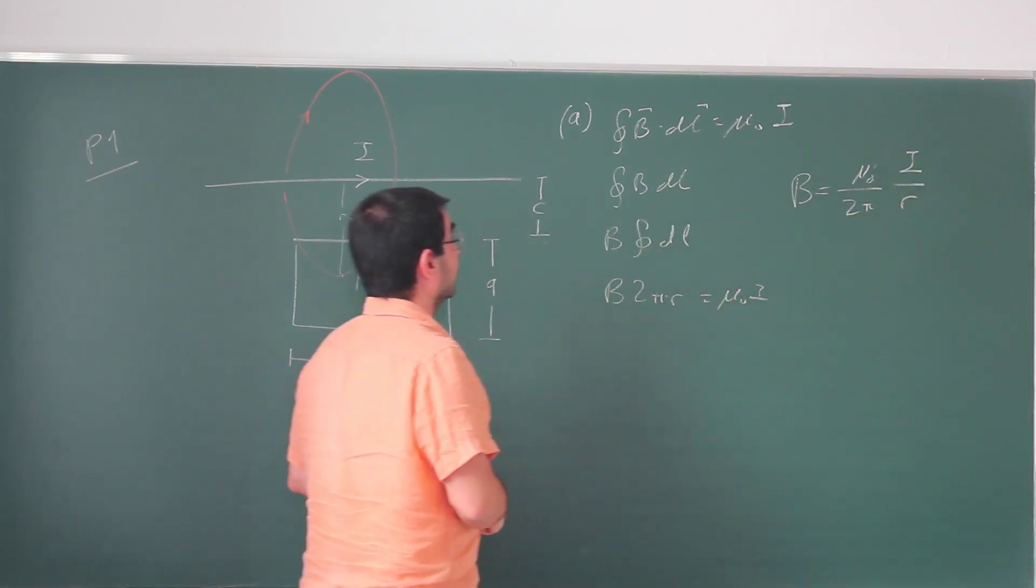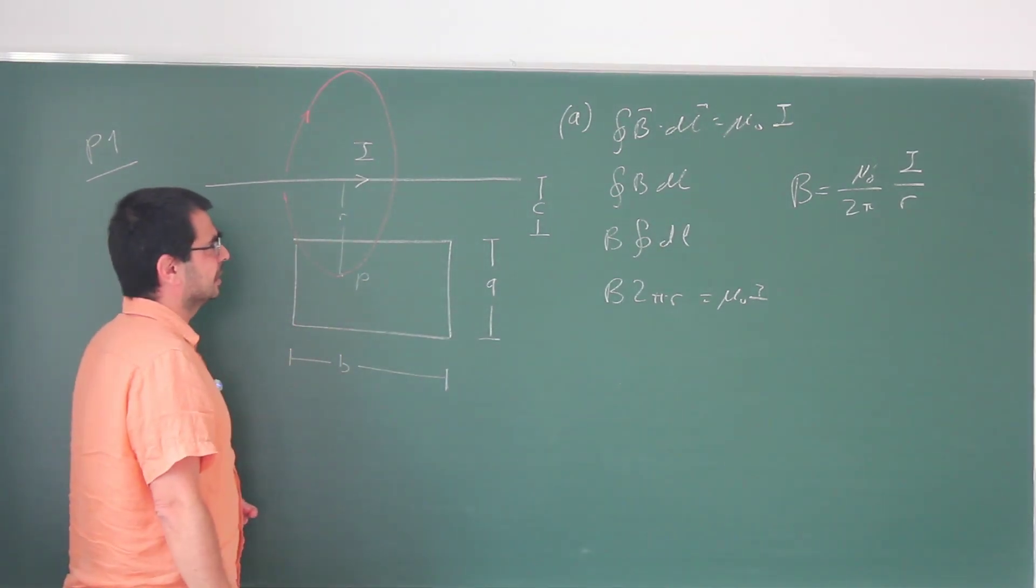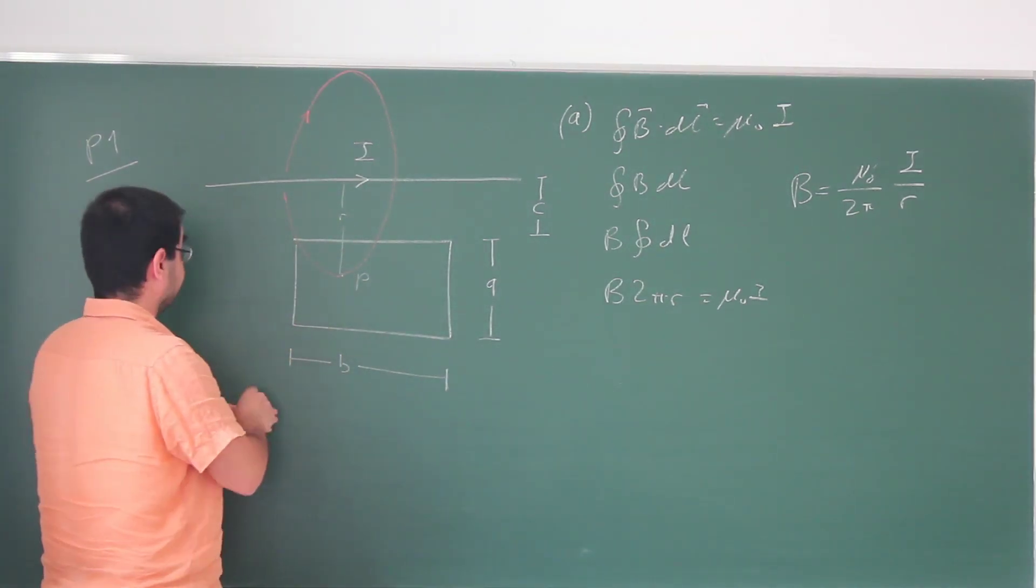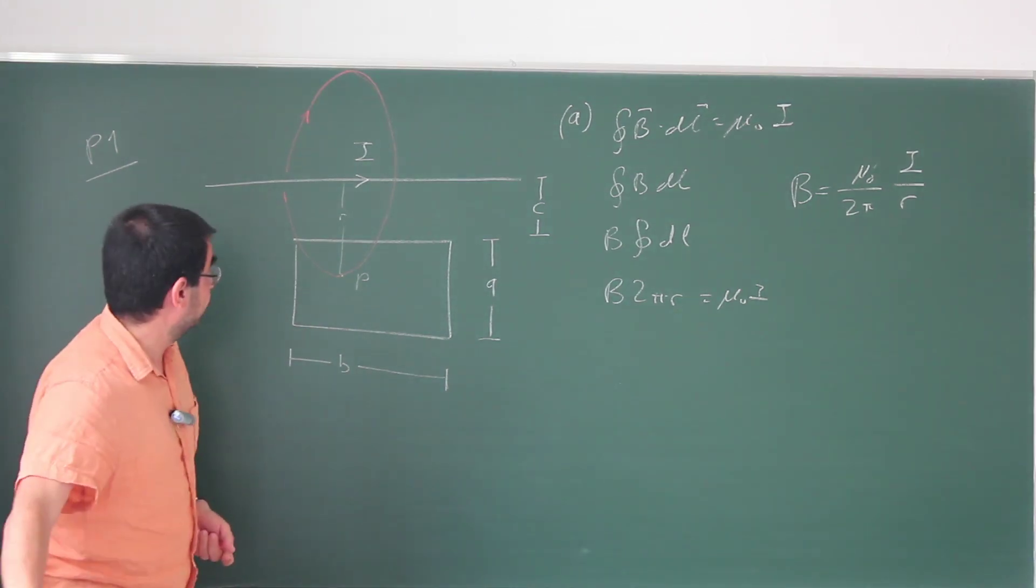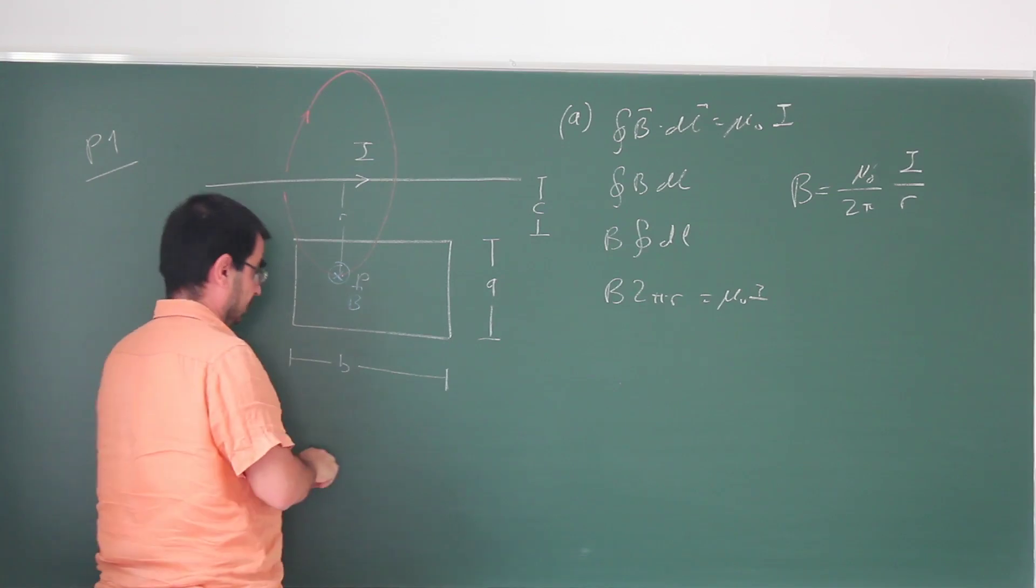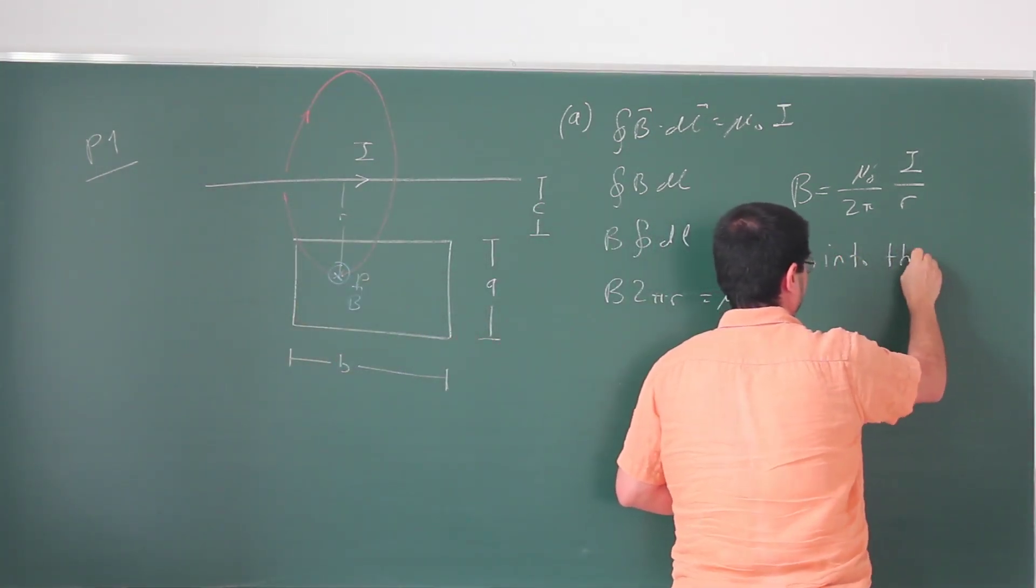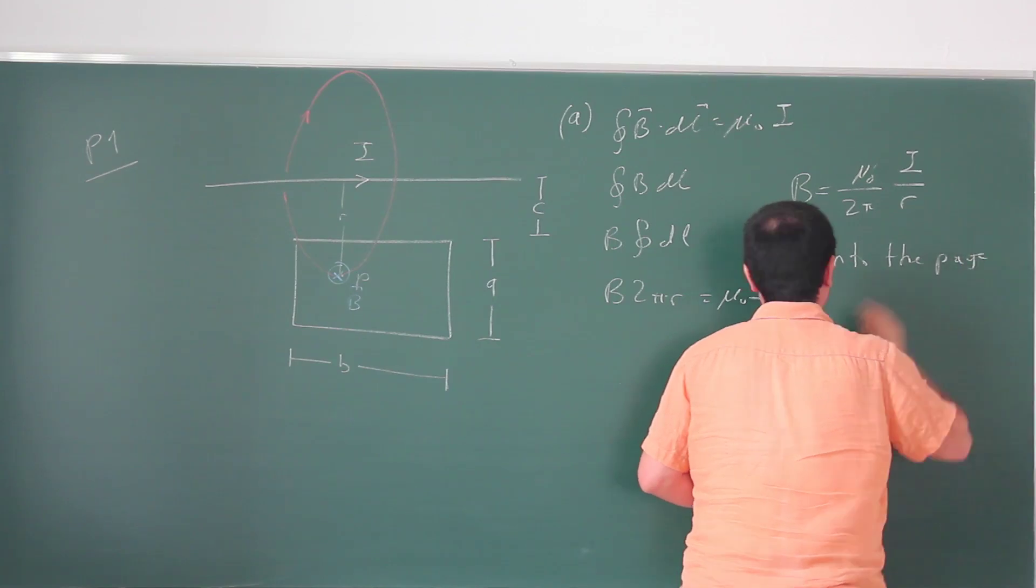This is the magnitude and because I made the assumption that this is actually in the direction of dL, the magnetic field at this point is going to be into the page or into the chalkboard in this case. So into the page.